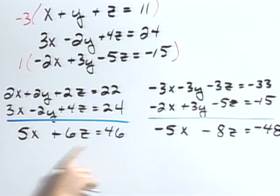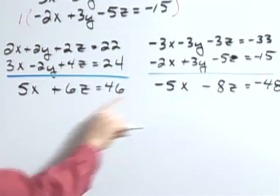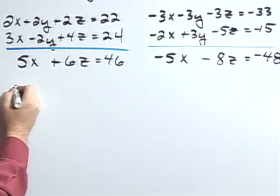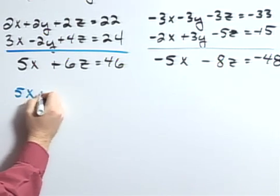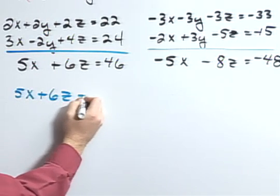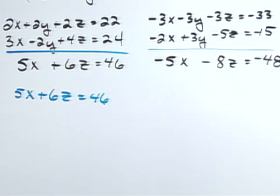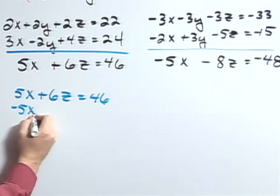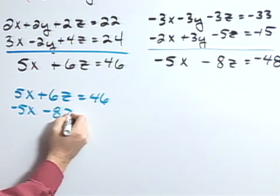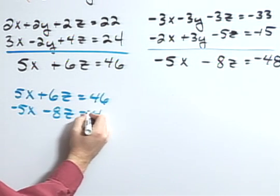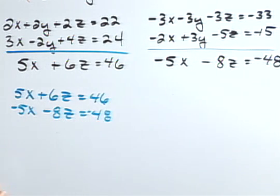Well from these two answers, I can rewrite a second system of equations that only has two equations, two unknowns. So 5x plus 6z equals 46 and negative 5x minus 8z equals negative 48.